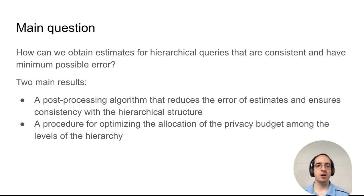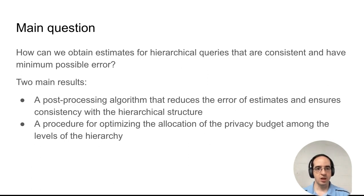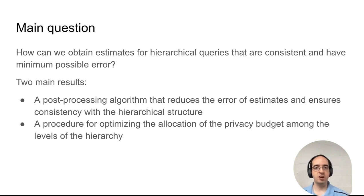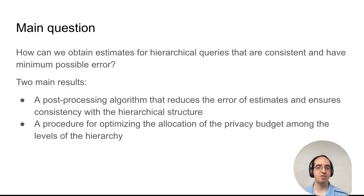We want to know how we can obtain estimates for hierarchical queries that have minimum possible error and are consistent with one another when we ask interrelated queries. We present two main results: first, a post-processing algorithm that improves the error of each estimate and ensures consistency with the tree; and secondly, a procedure for optimizing the allocation of the privacy budget among the levels of the tree.